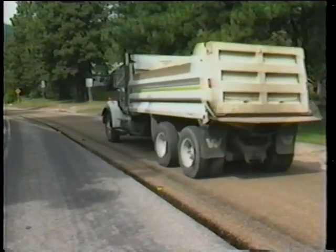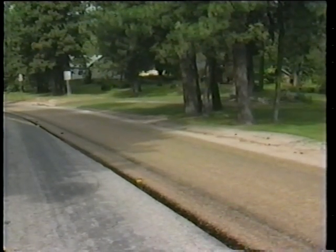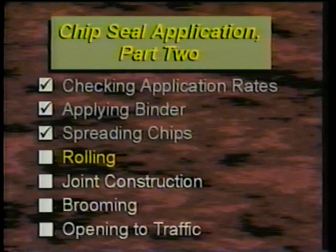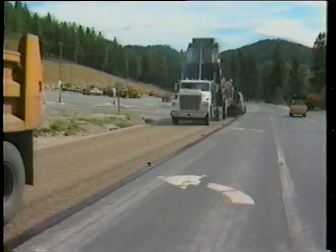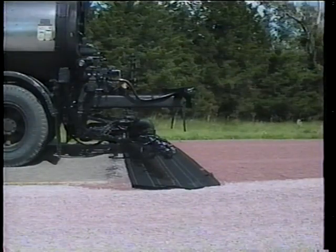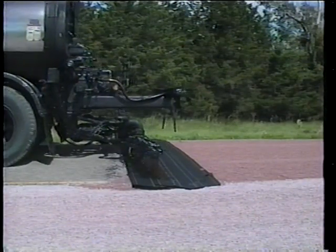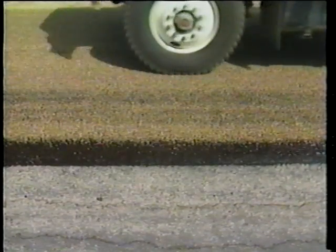All operators should avoid driving over any exposed oil. There are two types of joints: longitudinal, which run along the length of the road, and transverse, which run across the road. For longitudinal joints, when the adjoining lane will be chip sealed, there should be a narrow strip of oil that the spreader doesn't cover.